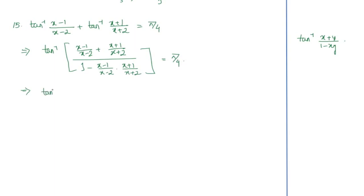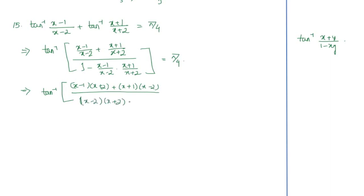Simplifying inside the bracket: the numerator becomes (x−1)(x+2) + (x+1)(x−2), and the denominator is (x−2)(x+2). The LCM at the denominator cancels with the denominator in the formula, so we can write: [(x−1)(x+2) + (x+1)(x−2)] / [(x−2)(x+2) − (x−1)(x+1)] = π/4. After simplification, this gives us 2(x² − 2) / (−3).